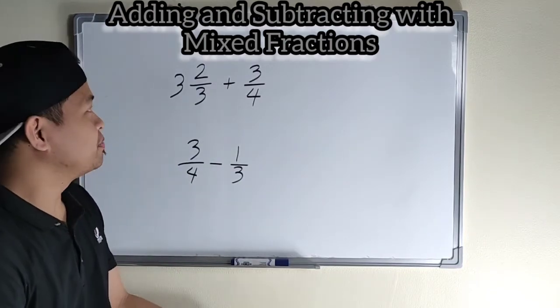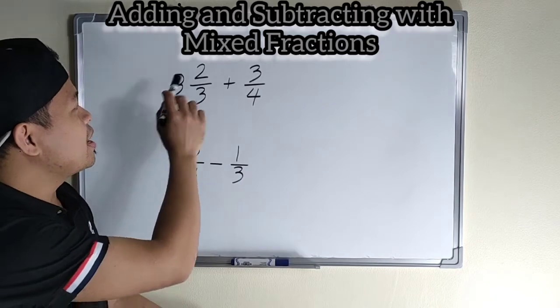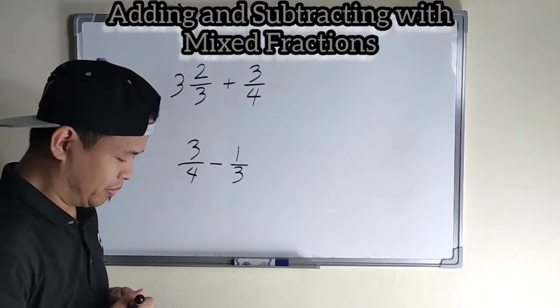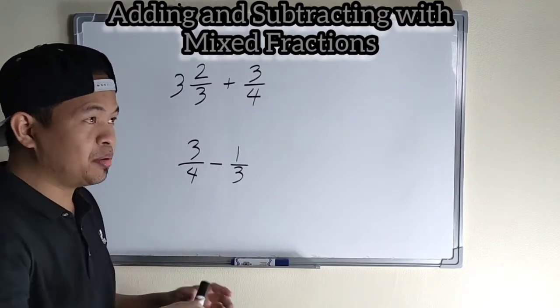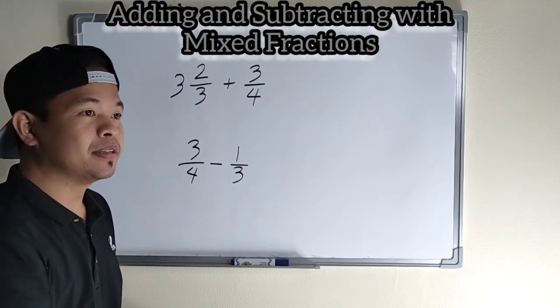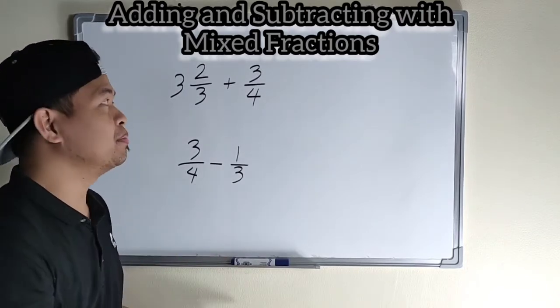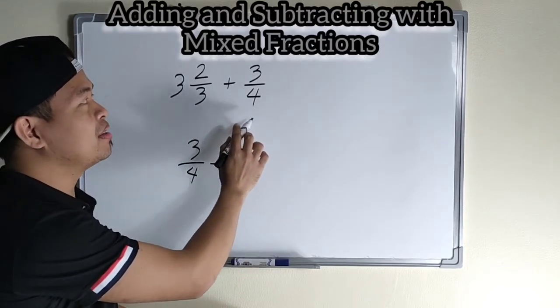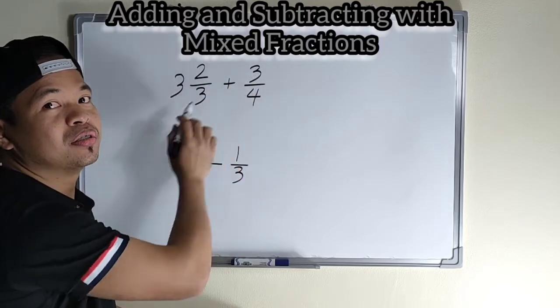Sagutan natin itong isa. We have three and two-thirds plus three-fourths. Same procedure nang ginawa natin last time. We just multiply the denominator then cross multiply.